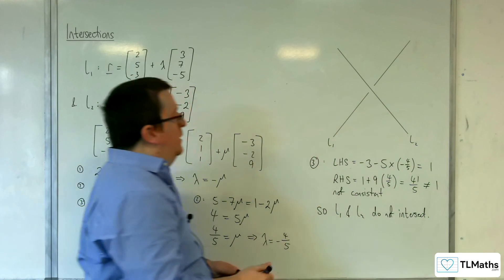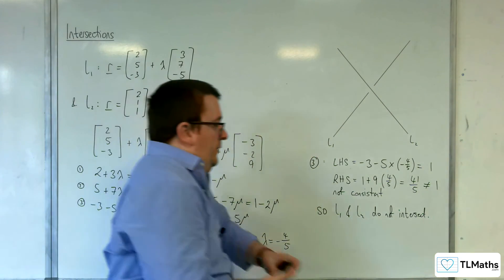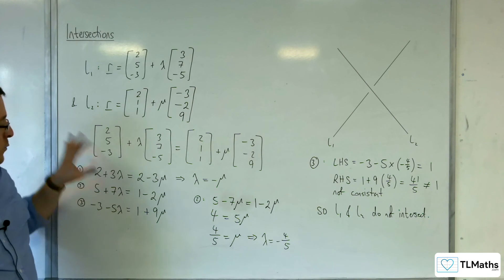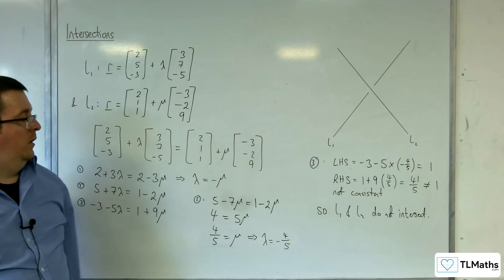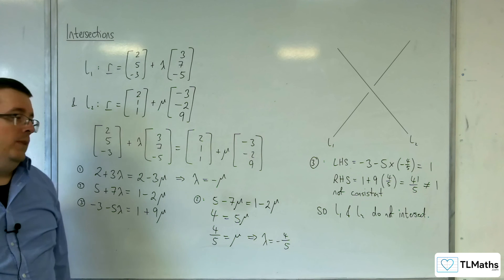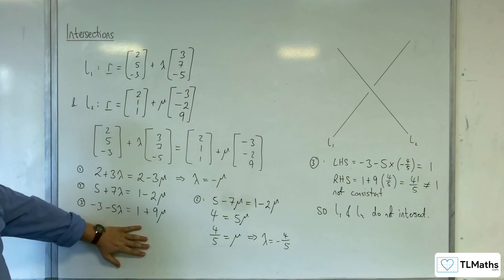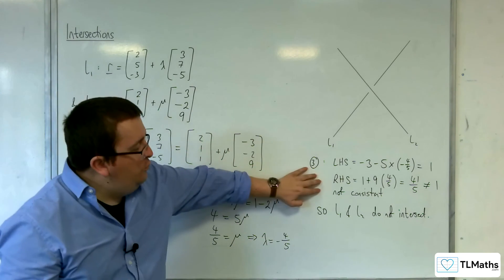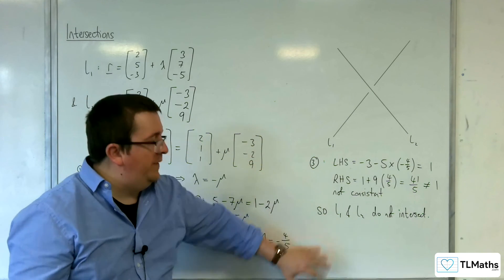So L1 and L2 do not intersect. So the idea then is that we put the two lines equal to one another. Remember, we solve two of the equations and then check it in the third. If it works in the third, then they intersect. If they don't work, then they're not consistent, so they don't intersect.